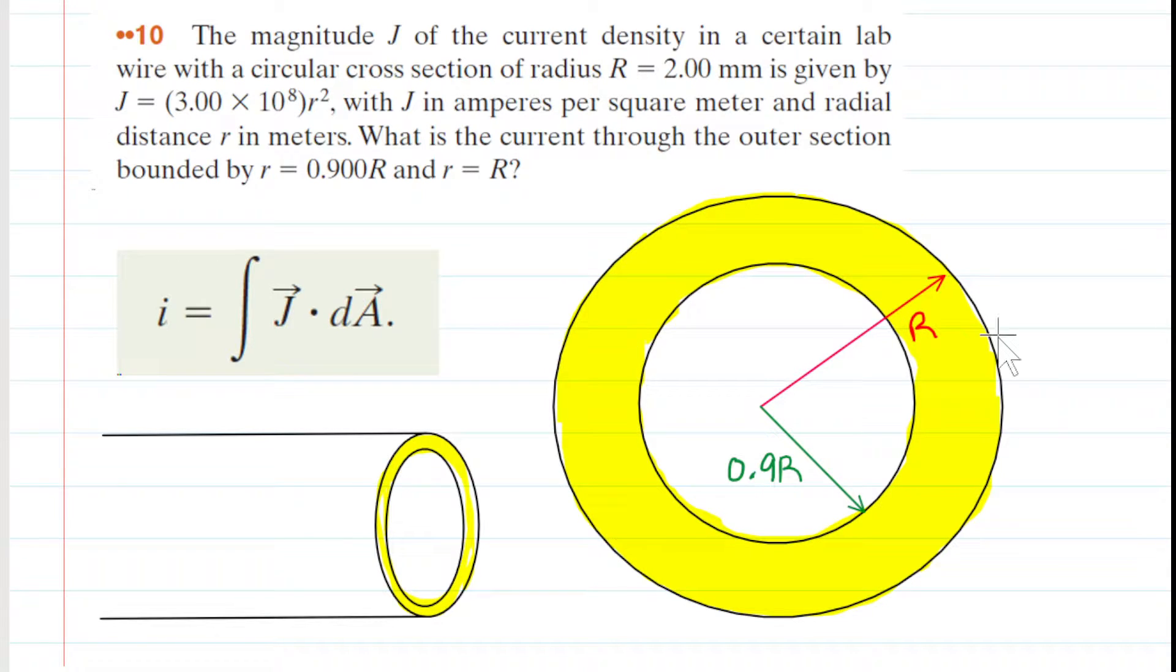In this question, we have the magnitude J of the current density in a wire with a certain cross-section whose radius is given, and we also have a non-uniform current density. We know it's non-uniform because the current density is a function of the radius squared. So as the radius changes, the current density will also change. We are asked to determine the current through the outer section that is bounded by a radius of 0.9R and then R itself.